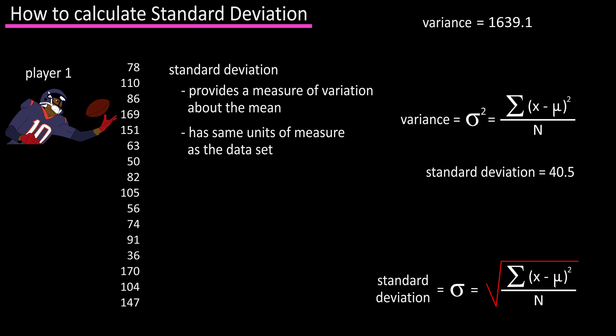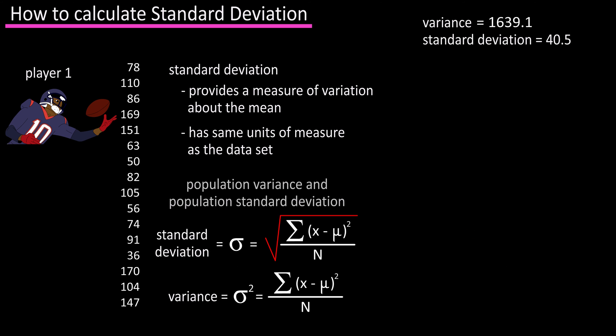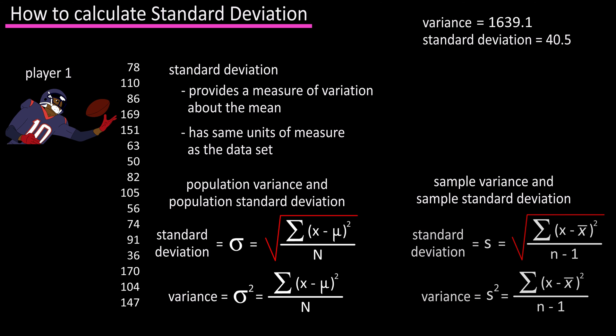One note: in this example I'm using the formula for finding the population variance and population standard deviation. The formula for the sample variance and sample standard deviation is a little different. As you see here, the sample variance uses a small s squared and n minus one in the denominator, and x bar replaces mu as x bar is the mean of a sample. The sample standard deviation also uses a small s and n minus one and x bar.